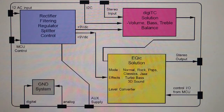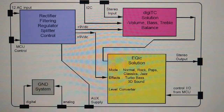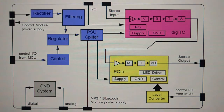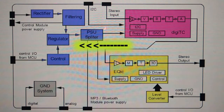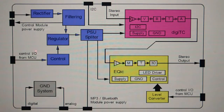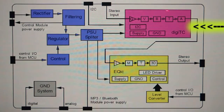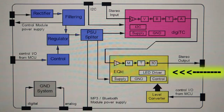We are going to take a look at the equalizer module. Here is the exploded diagram of the four major blocks of the equalizer module, and we can see that the power supply is basically composed of five blocks. The DGTC solution comes with the internal block diagram already, as well as the EQIC solution.